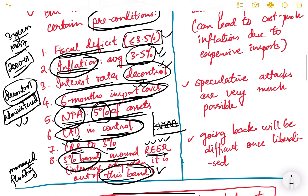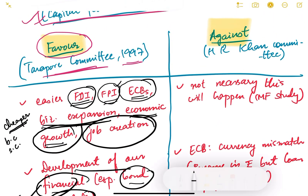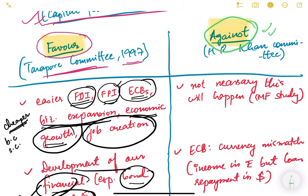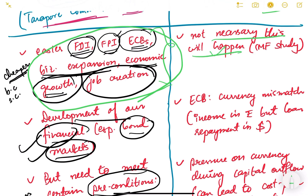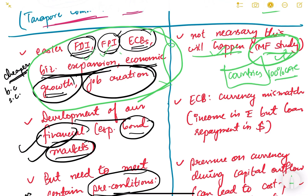We did not meet all these preconditions, which is why we have not yet fully liberalized our capital account. As for arguments against, the HR Khan Committee noted, based on an IMF study, that the benefits cited by the Tarapur Committee did not necessarily accrue to countries with 100% capital account convertibility. In fact, the opposite happened — as in East Asian countries like Thailand and Malaysia, it led to the Asian financial crisis and speculative attacks on currencies.